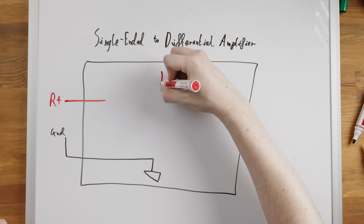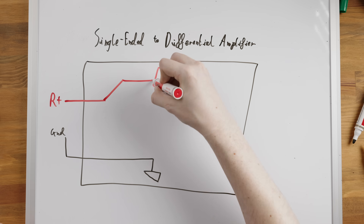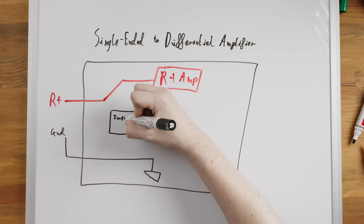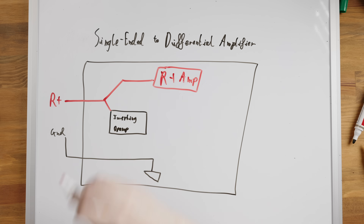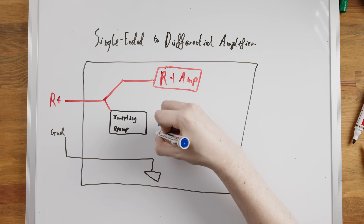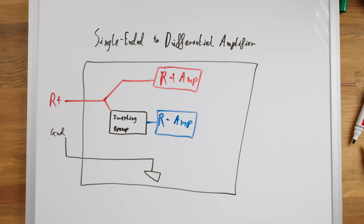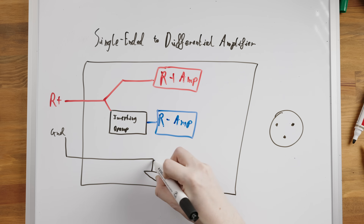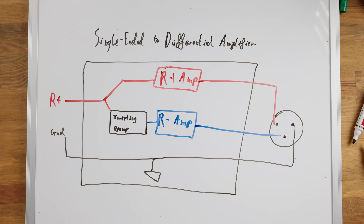Similarly, many amplifiers will accept a single-ended unbalanced input and convert it to differential internally, so that they can still provide a differential output to the headphones or speakers.